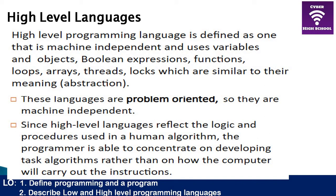High-level languages are programmer-oriented. These languages use instructions which are very much like English statements and are easy to write. One major advantage is that they are machine independent — you create a program, copy it to several different computers, and those people can use it. Most programs we use on our computers are created using high-level languages. With mobile phones, app stores like the Play Store and App Store allow millions of people to download and use the same app independently on their devices.